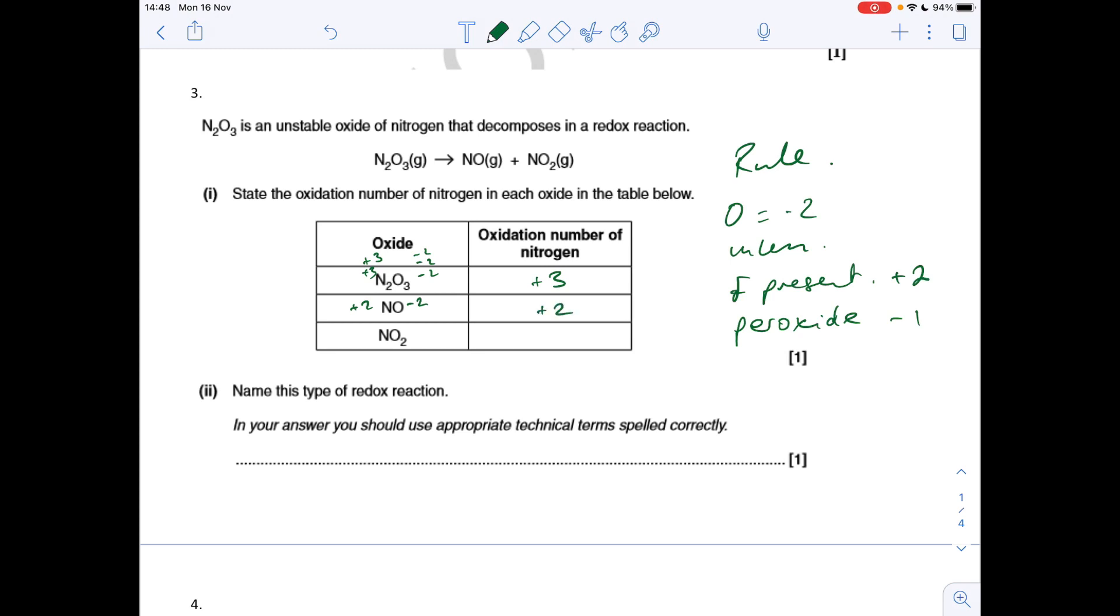And in the third one, we've got two -2s for those two oxygens. So that's going to have to be +4. So that's actually going to help us with part two. If I just write down these oxidation numbers above the relevant Ns, we've got +3, +2, and +4. So we've got a decrease in oxidation number there. So that's a reduction process, but we've got an increase in oxidation number there. So that's an oxidation process. So what do we call that type of reaction? Disproportionation.